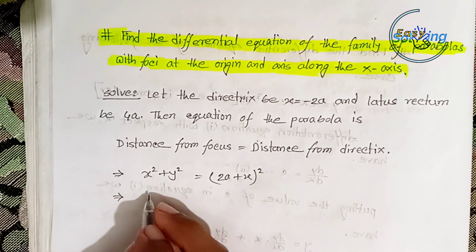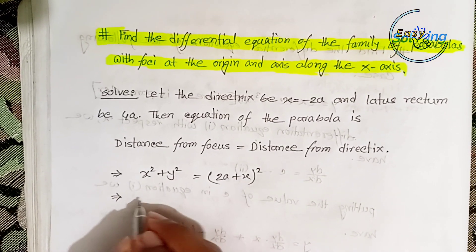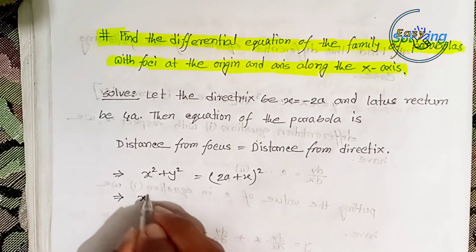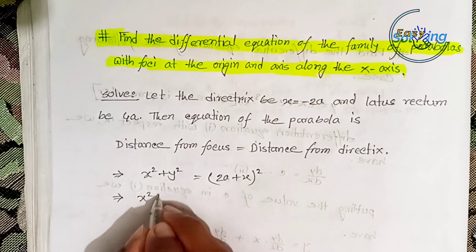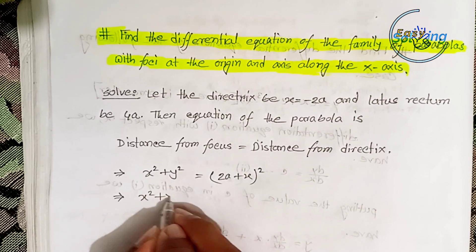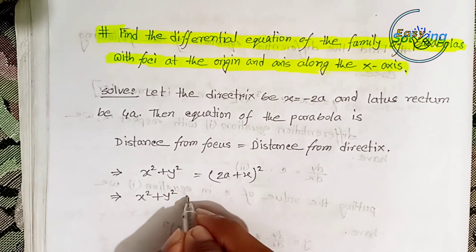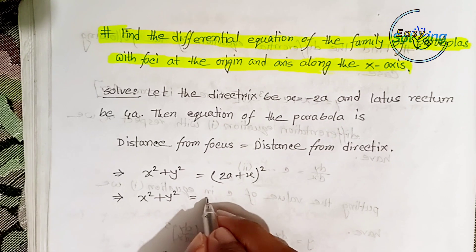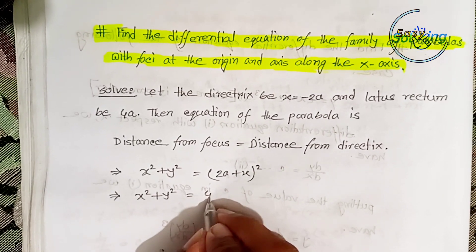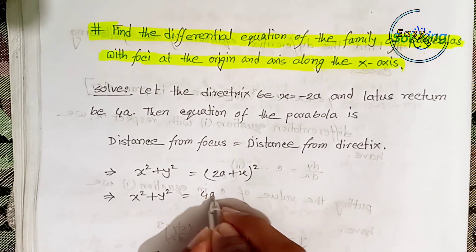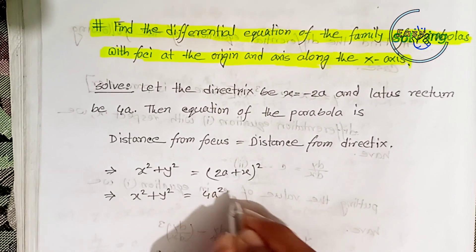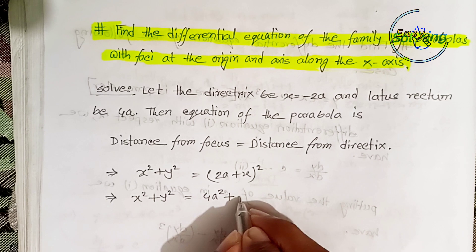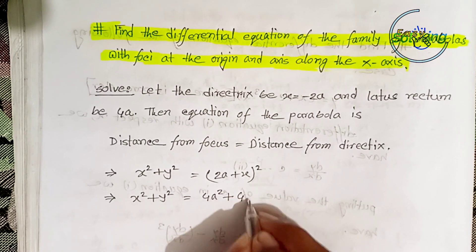Let the directrix be x = -2a, and let us write it as 4a. So the directrix is x = -2a.